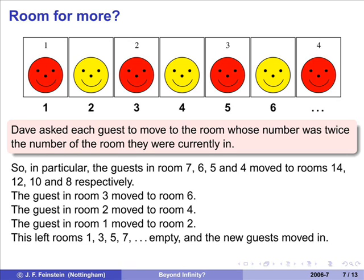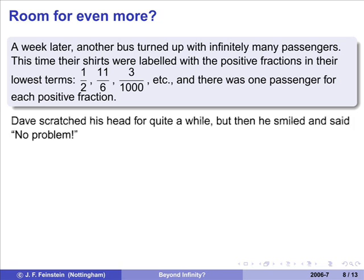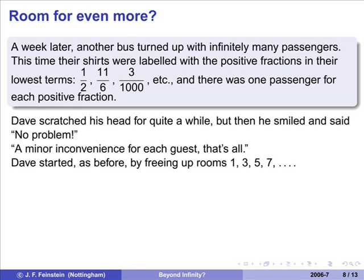The thing has gone a bit harder for Dave after this, but he's very clever. So, he's going to manage okay. So, a week later, a bus turned up with passengers whose shirts were labelled with positive fractions in their lowest terms. So, there they are. There are a few of the passengers, one over two, eleven over six, three over a thousand, and some with some very, very big numbers on top and bottom, which had to be written in very small print. Dave had a think about it, and came up with a solution. Actually, he thought up two different solutions. One of them is on your printed handout, and the other one is going to be here on the screen. So, he started by freeing up rooms one, three, five, and seven, just as he had done before, by asking everybody to go into the room twice the room they started in. So, that freed up infinitely many rooms, but those rooms it's not obvious how to fit the new guests into.